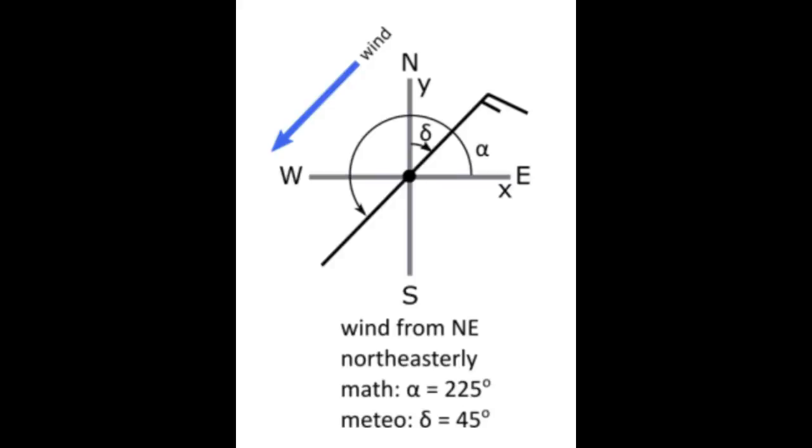The meteorology description of wind direction originates from the compass and facing into the wind, where the wind comes from. The mathematical description of wind direction is based on the Cartesian XY grid and tracks the direction that the wind is going.